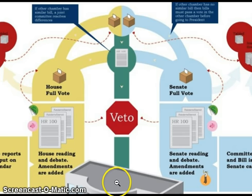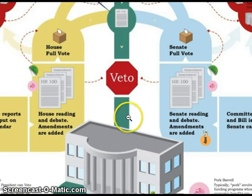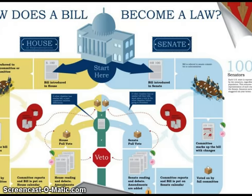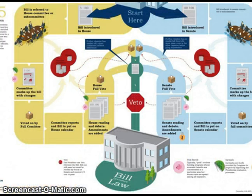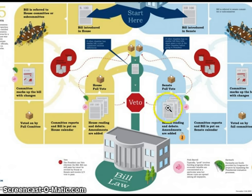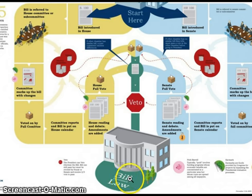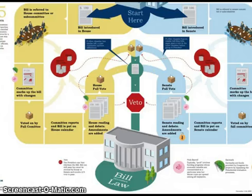From there, it goes to the White House. The president can do two things: he can either veto the bill, and if he vetoes it, it's sent back to each house where they have a chance to override the president's veto. However, if the president likes the bill and signs it, the bill has now become law — a new law that our government will give to the people to be followed.